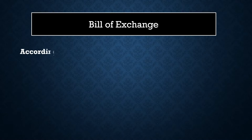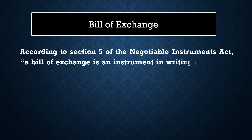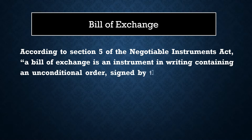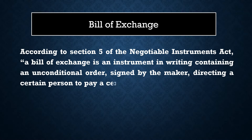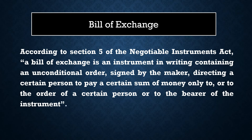First, we will see the definition of bill of exchange. According to Section 5 of the Negotiable Instruments Act, a bill of exchange is an instrument in writing containing an unconditional order signed by the maker, directing a certain person to pay a certain sum of money only to or to the order of a certain person or to the bearer of the instrument. You can have more clarity in the definition through its features.